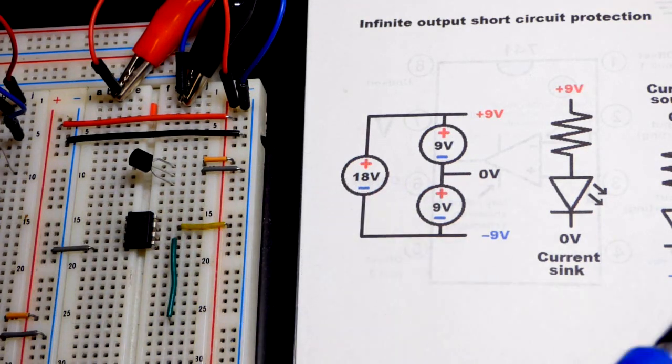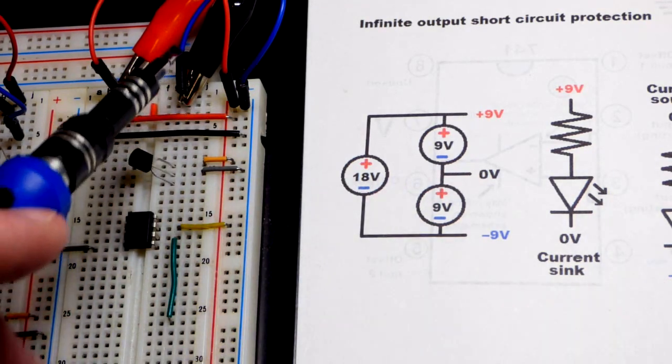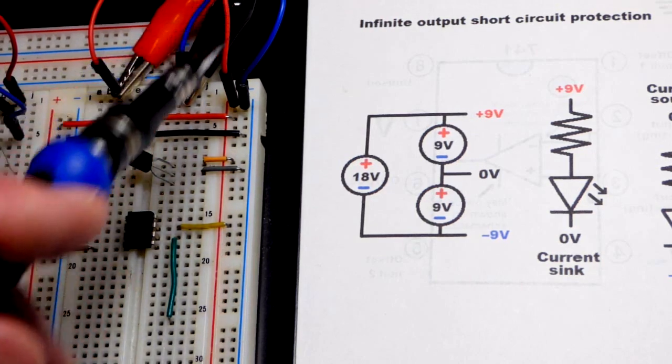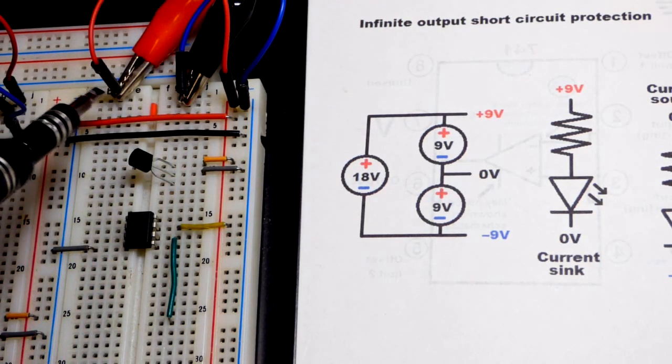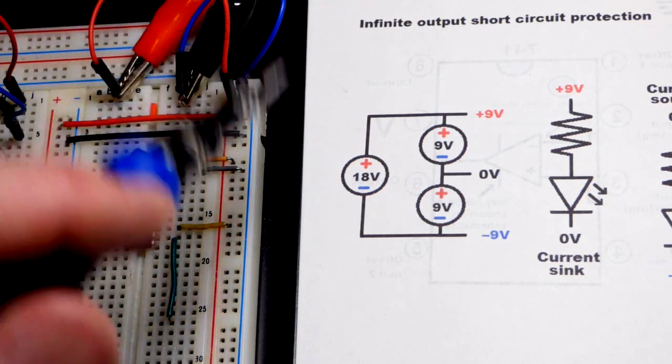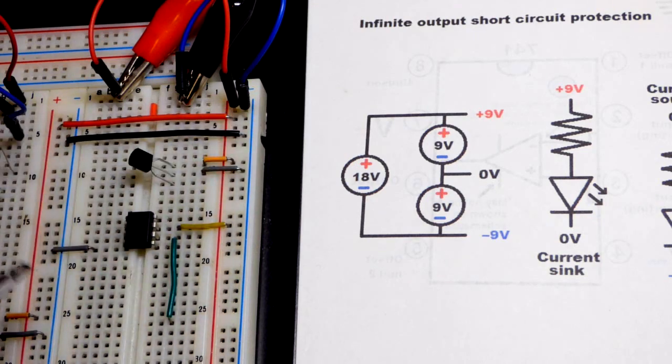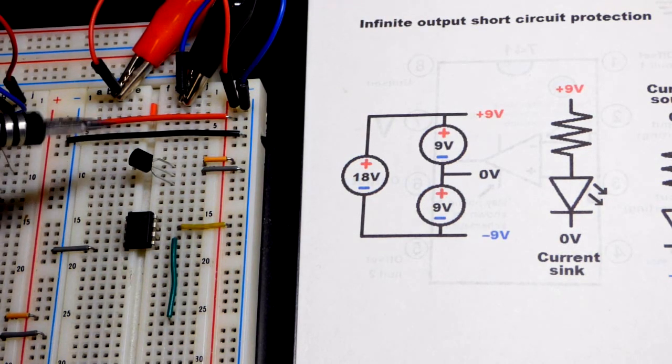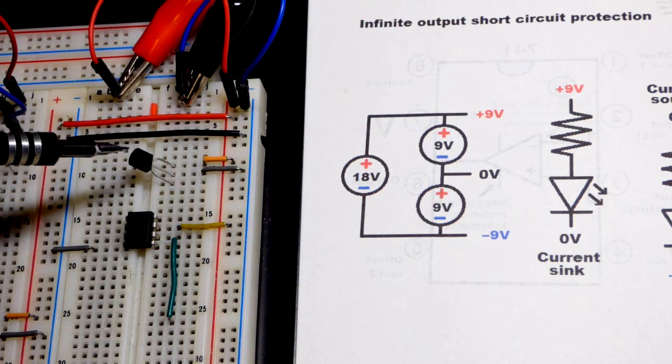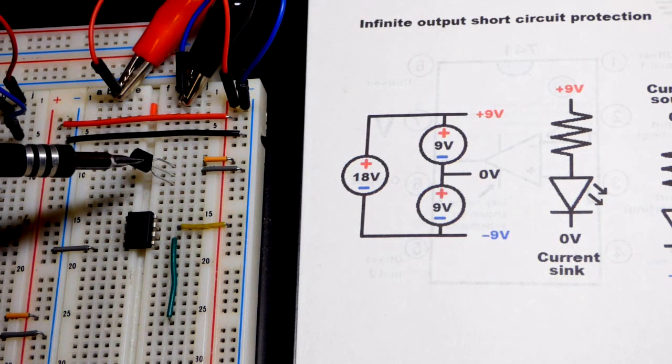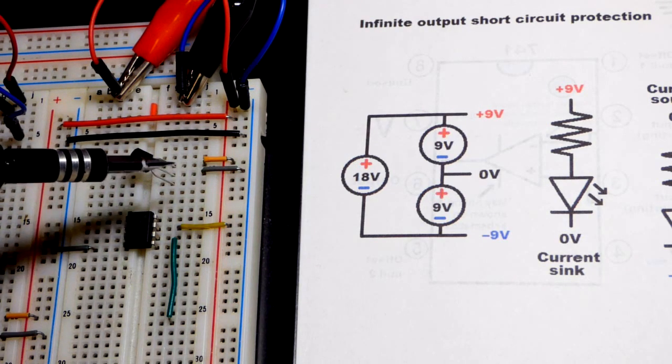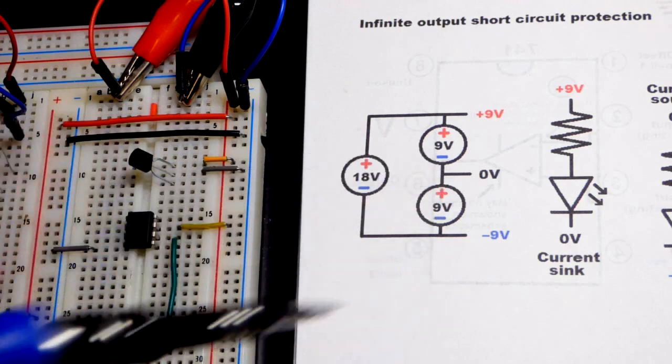So we can take 18 volts which I have the power supply set to. The alligator clips come from the power supply, they're clipped to jumpers which plug to the rail. And lately in my videos I've been using the TLE 2426 right there. It automatically splits the rail for us.